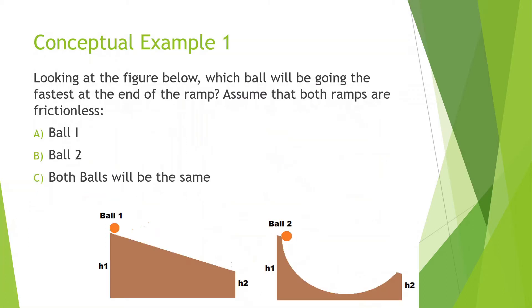Moving on. Looking at the figure below, which ball will be going the fastest at the end of the ramp? Assume that both ramps are frictionless. So we have ball 1 and ball 2 — frictionless, so they won't be rolling. What we should know is they start at the same height and they also end at the same height.